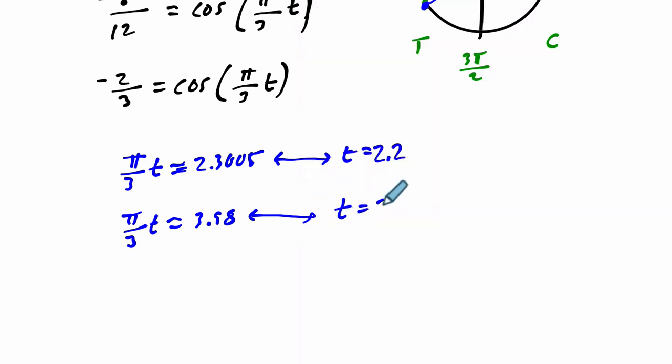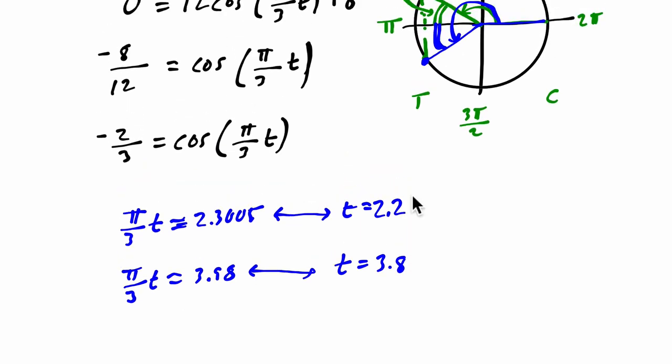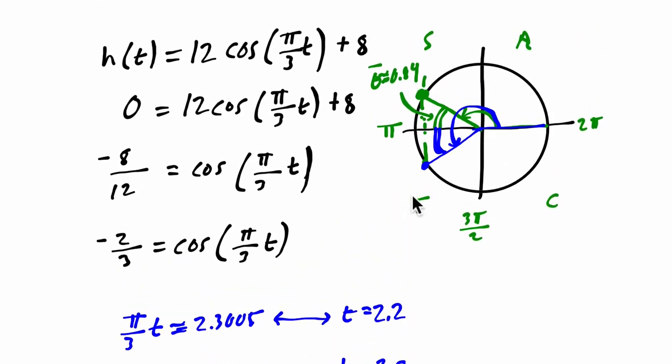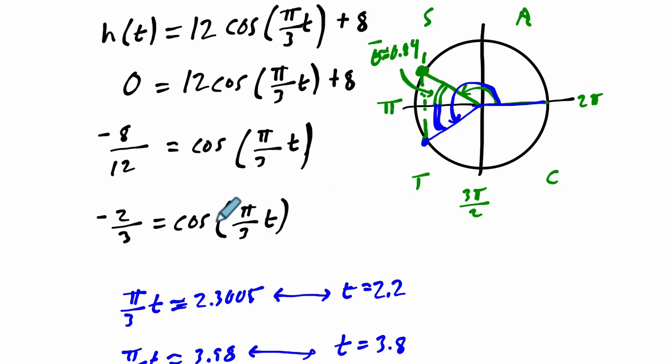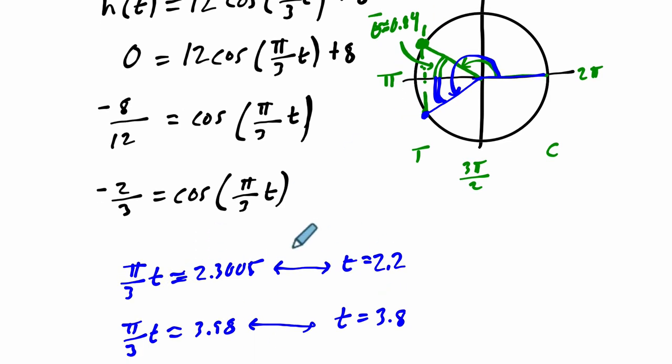And again, all we did was isolate our cosine term here, do the inverse cosine function, find the angles where this is true, and then solve for t. If we were just finding the cosine, if this was just theta or some angle measurement or just t, we would have been done there. But we had to solve for t as well. That's what this last piece was.